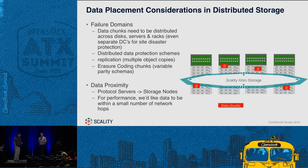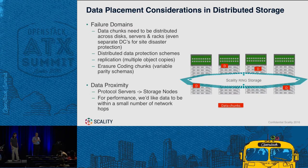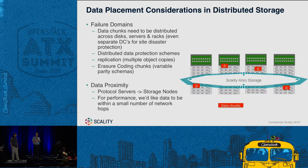There are some challenges in distributed storage. The two most relevant to the choice of networking technology are failure domains and data proximity — these are data placement considerations. As you move to a distributed storage system, you have considerations about where you place data. This isn't the model of a RAID controller managing eight or ten local drives. Instead, we're taking a big file or object and distributing it across the system. The first consideration is the notion of a failure domain — I want to take replication chunks, multiple copies of a file, and distribute those across my servers, disks, racks, and potentially even multiple data centers.